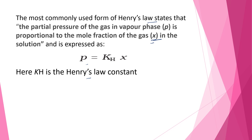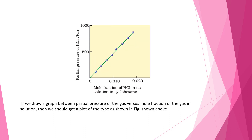Let's see a graph. If you draw a graph between partial pressure of the gas versus mole fraction of the gas in solution, we should get a plot of the type as shown in the above figure. Partial pressure of HCl is measured in Torr and represented on the y-axis, and mole fraction of HCl in its solution in cyclohexane is represented on the x-axis.